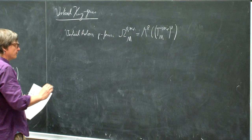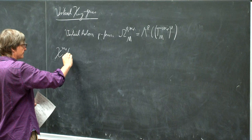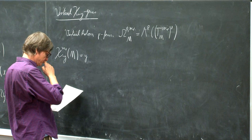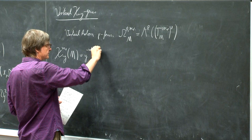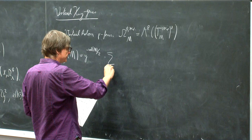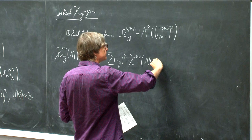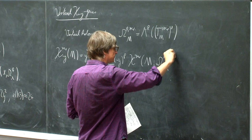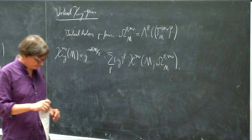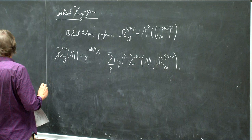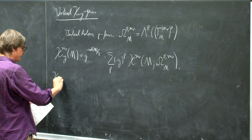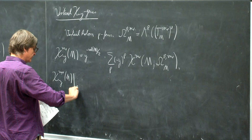So we just replace this in our formulas and get the virtual chi-y genus. I renormalize to make the formulas nicer, dividing by y to the virtual dimension divided by 2, times the sum over all p of minus y to the p, and then I take the virtual holomorphic Euler characteristic of our moduli space with these holomorphic p-forms.